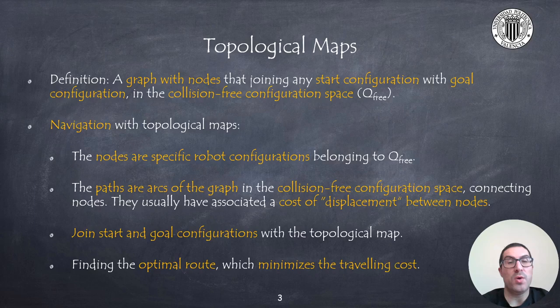Routes joining two nodes represent the set of configurations that the robot must follow to move from one node to another and must be also in the collision-free configuration space. But this is out of the scope of this presentation.